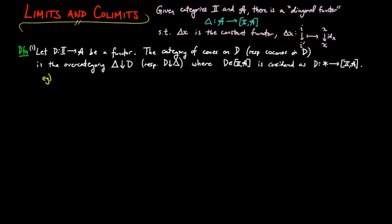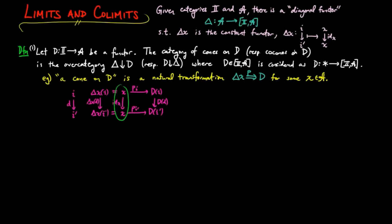Then an object in this category is called a cone on D, and it is a natural transformation delta x to D for some A object x. This means for each I morphism there is a commuting square. But since the constant functor on x takes everything to the identity on x, this is equivalent to a commuting triangle for each I morphism.